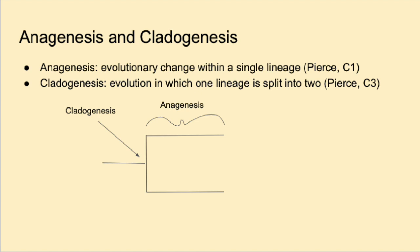Cladogenesis is where we see one lineage branching into two. This leads to the branches in our tree, where evolution now occurs separately for two organisms, leading to biological diversity.